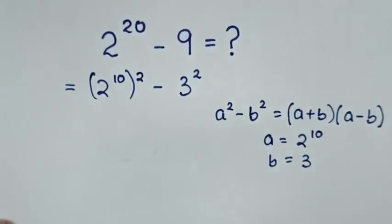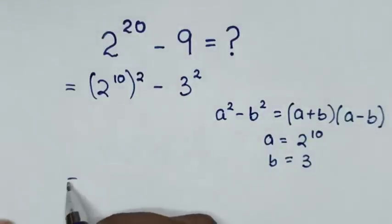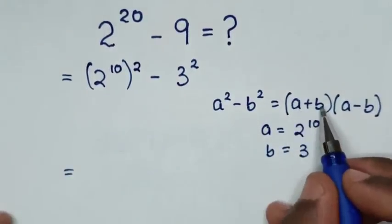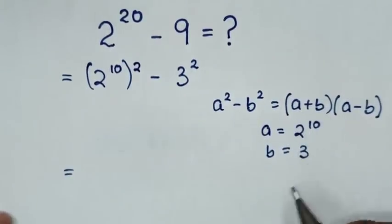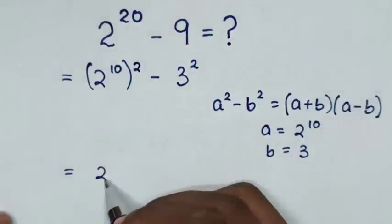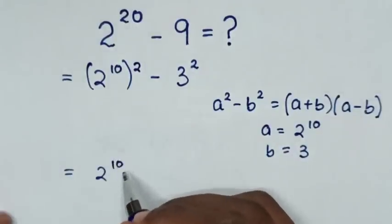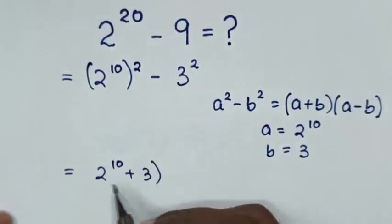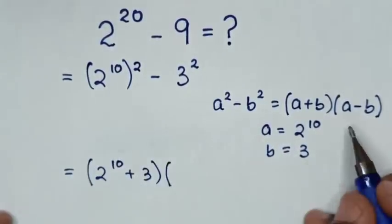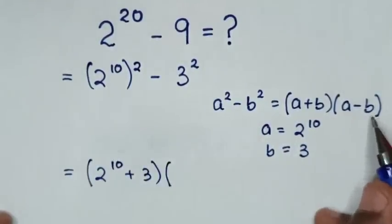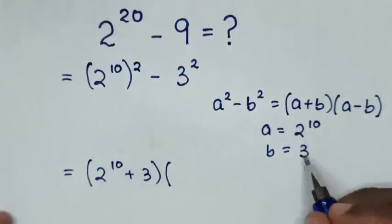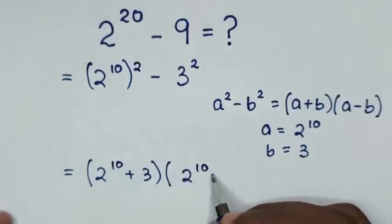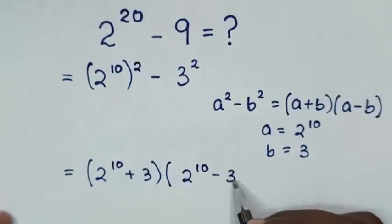Then in the next step, it will be equal to a plus b, which is 2 power 10 plus 3, bracket times a minus b, which is 2 power 10 minus 3.